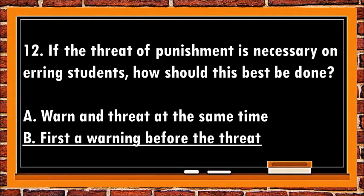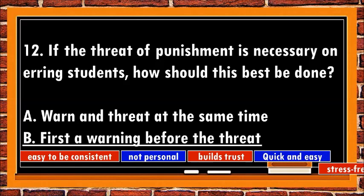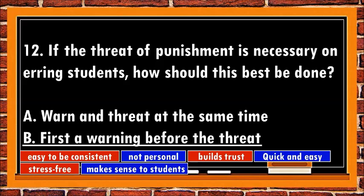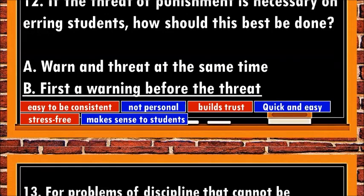The best answer is b. First a warning before the threat. A warning works best as a first consequence because it's easy to be consistent, it's not personal, it builds trust, it's quick and easy, it's stress-free, and it makes sense to students. You can read a full article about why warning should be the first consequence — link in the description box below.